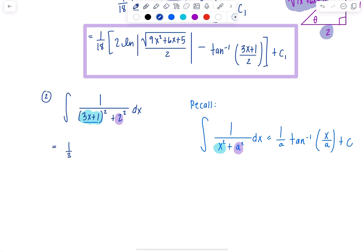I'm going to have a 1 third because of the 3 in front of the x. 1 over a, so that's 1 half tan inverse. Instead of just x, we have 3x plus 1 over 2. I'm going to say plus c2. So this is 1 sixth tan inverse 3x plus 1 over 2 plus c2. That's it for integral number 2.